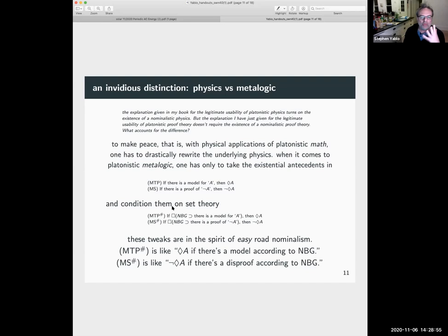What accounts for the difference? So to make our piece with physical applications of Platonistic math, we have to drastically rewrite the underlying physics. When it comes to Platonistic meta logic, it has only to take the existential antecedents in if there's a model for the sentence A, then possibly A. If there's a proof of not A, then not possibly A. And you condition them on set theory.